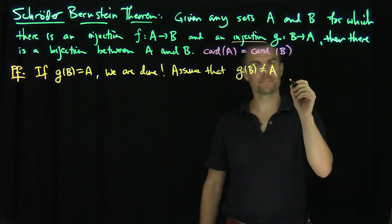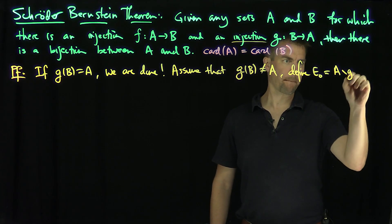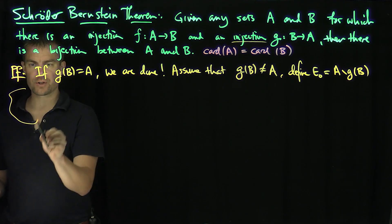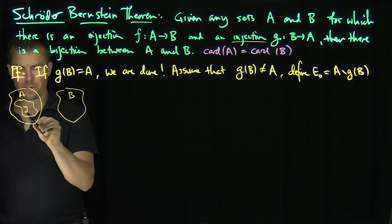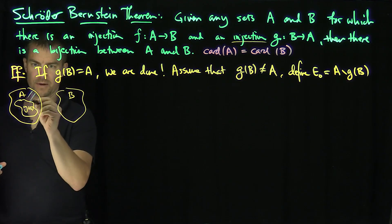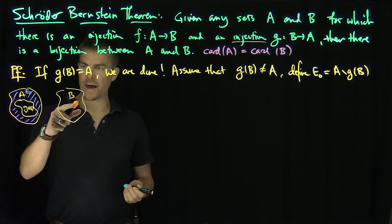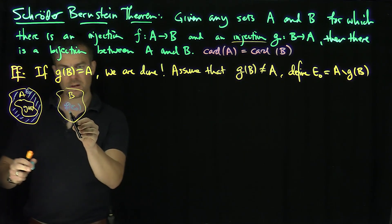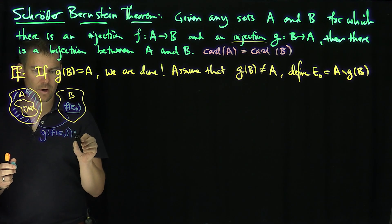Define E0 to be A minus G of B. That's a non-trivial subset of A. So here's my set A, here's my set B, and here is G of B. This E0 is everything else — that blue shaded region is my E0. Then I'm going to map E0 back into B and look at F of E0, and then take G of F of E0, which I'll call E1.